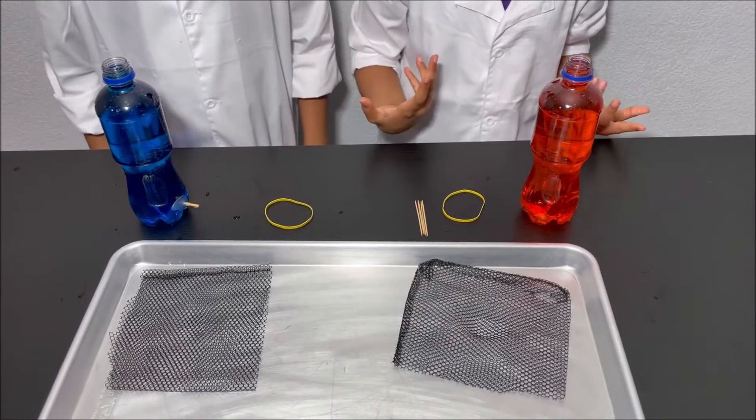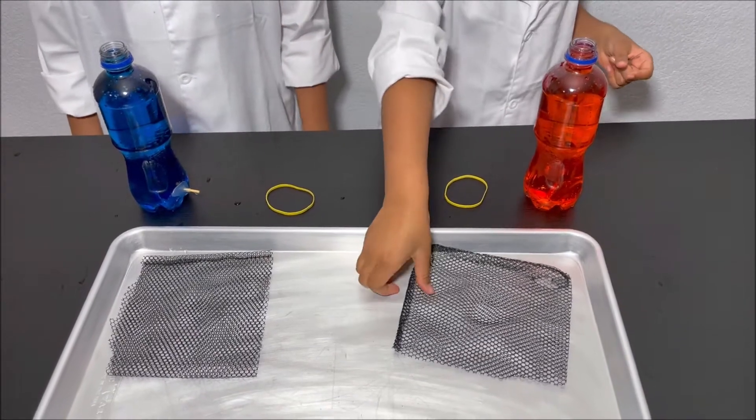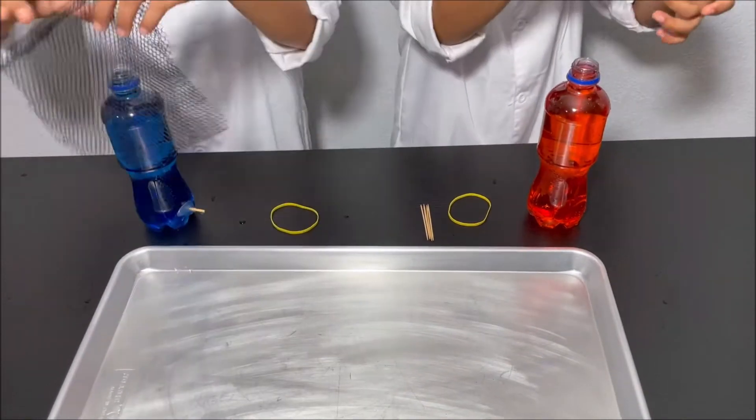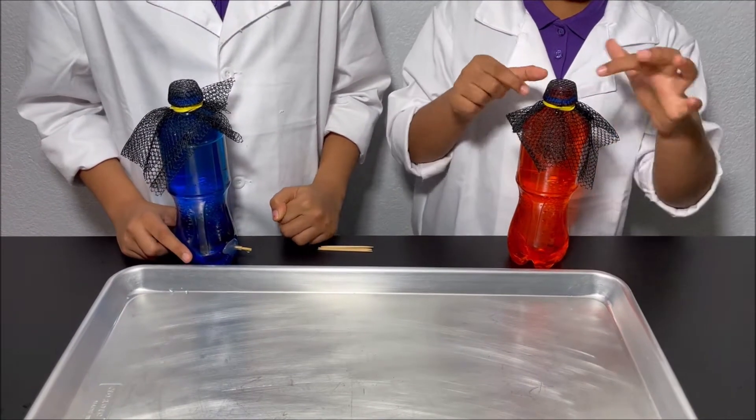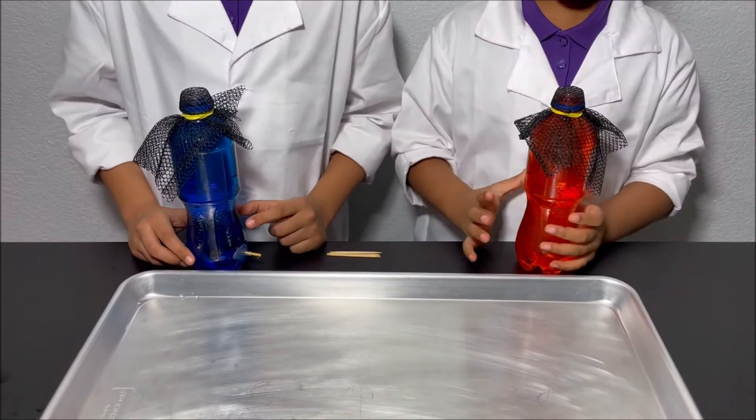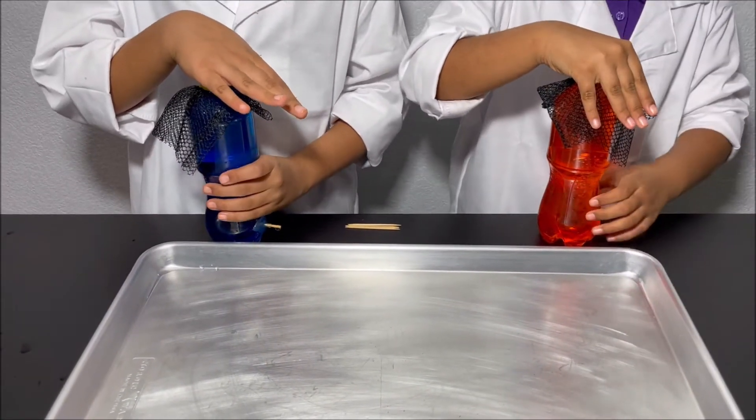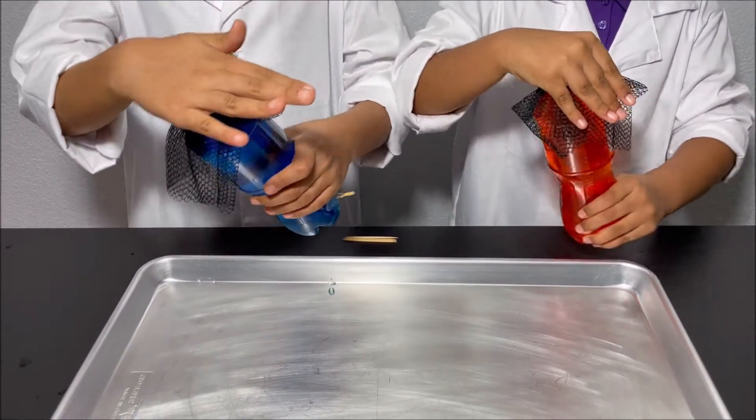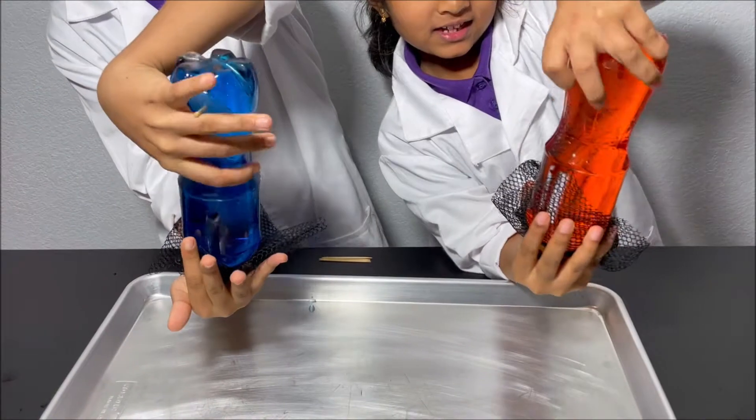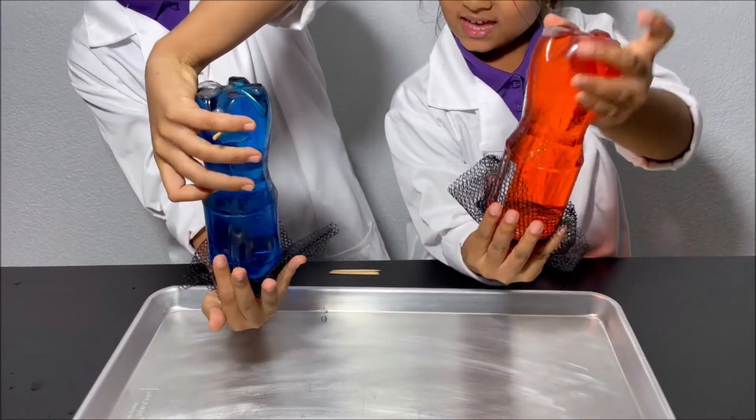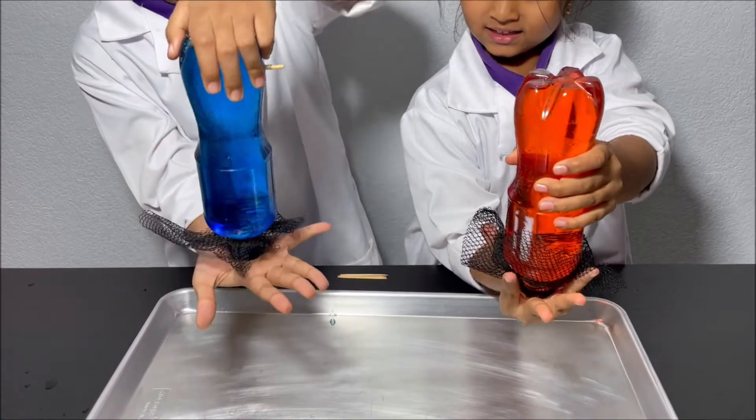Now we poured water into our two bottles and we're going to put the net on top of our bottles. We put the net and the rubber band on top of the bottle and we're going to put our hand over the bottle and carefully tilt it upside down. And we're gently going to let go.